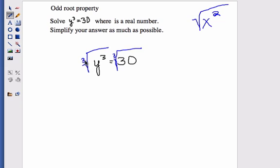So when I take the cube root of y to the third, they undo each other. That leaves me with the y on the left side. And now I have the cube root of 30 on the right side.